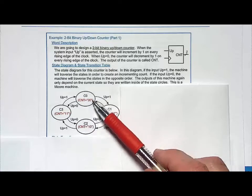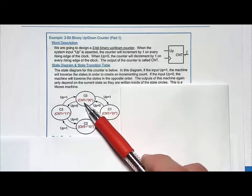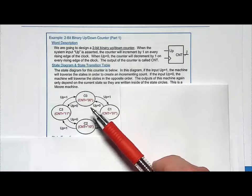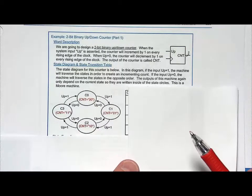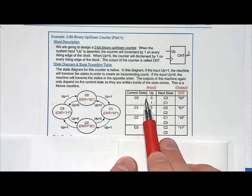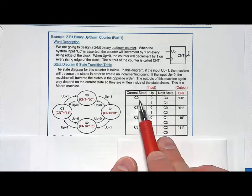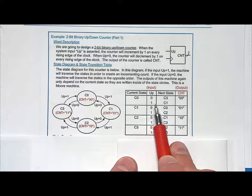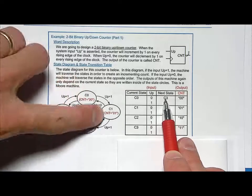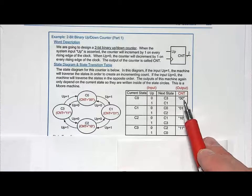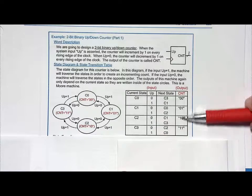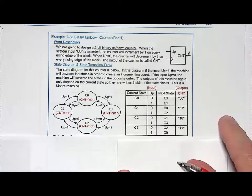These are state-encoded outputs, so when we choose our state code, we select the output value, and that will minimize our output logic. Now let's look at the state transition table. We have two values for 'up' in every current state, and for each value we indicate where it goes. If I'm in C0 and get a one, I go to C1. If C0 gets a zero, I go to C3, representing counterclockwise. Notice the output is only dependent on the current state — this is a Moore-type machine.